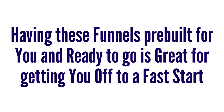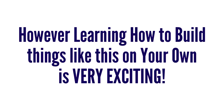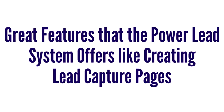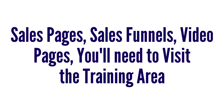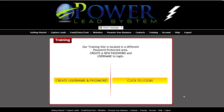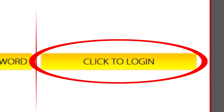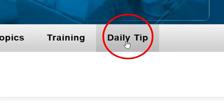Having these funnels pre-built and ready to go is great for getting you off to a fast start. However, learning how to build things like this on your own is very exciting. Once you're ready to start learning how to use all the great features the Power Lead System offers — like creating lead capture pages, sales pages, sales funnels, and video pages — you'll need to visit the training area. To access the training area, just click on the main tab called Training. The first time you come here you'll need to register — click the button that says Create My Username and Password. You only have to register once, so every time you come back just click the Login button. Once in the training area, pay special attention to the tab called Daily Tip.